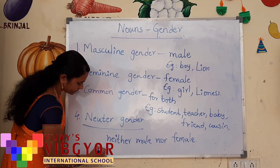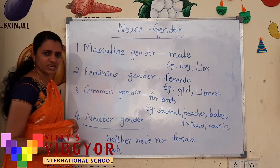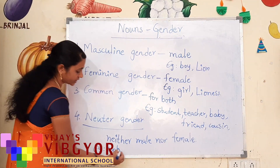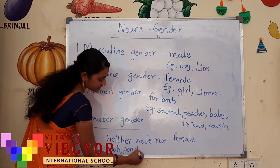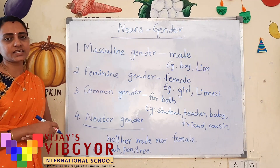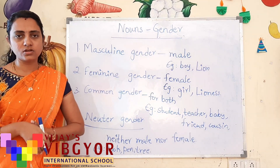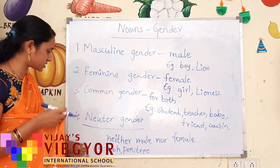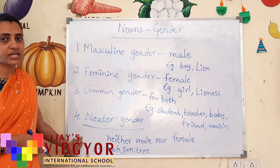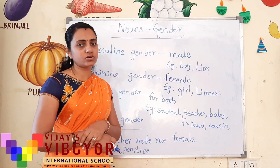For example, 'book' — it is neither male nor female, you cannot apply gender to it. Next, 'pen', 'tree' — these are not male-only, not female-only, and not commonly used for both male and female. So these terms fall in the category of neuter gender. Each of these four — masculine, feminine, common, and neuter — is a gender.